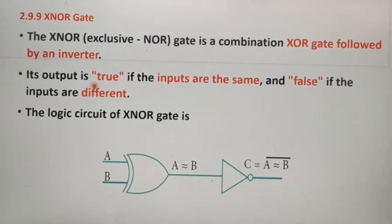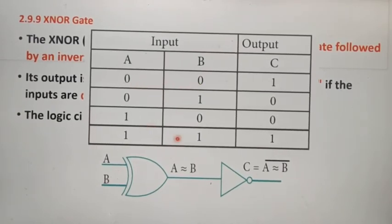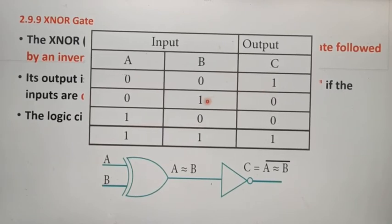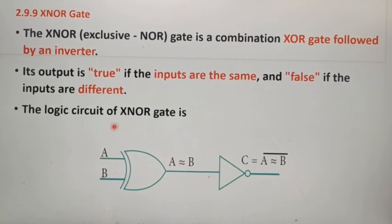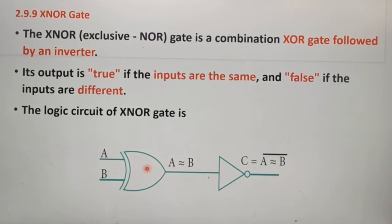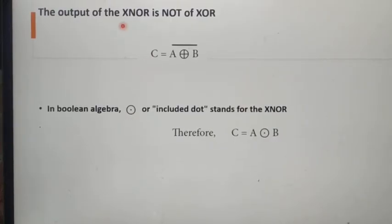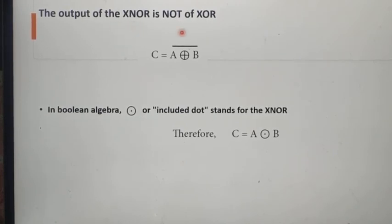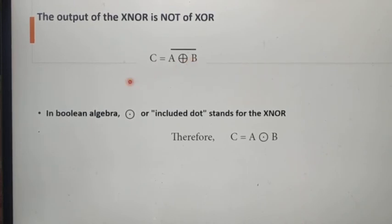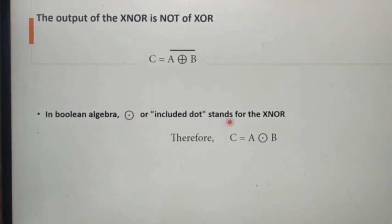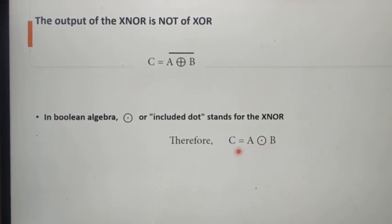The output of the XNOR gate is true if the inputs are the same and false if the inputs are different. If both inputs are the same (0,0 or 1,1), our output is true (1). If both inputs are different (0,1 or 1,0), our output is false (0). The logic circuit of Exclusive NOR Gate is the Exclusive OR Gate circuit with an inverter. The output can be written as C equals NOT of (A ⊕ B). In Boolean algebra, we use the encircled dot operator (⊙) to represent Exclusive NOR, so C equals A ⊙ B or C equals A Exclusive NOR B.